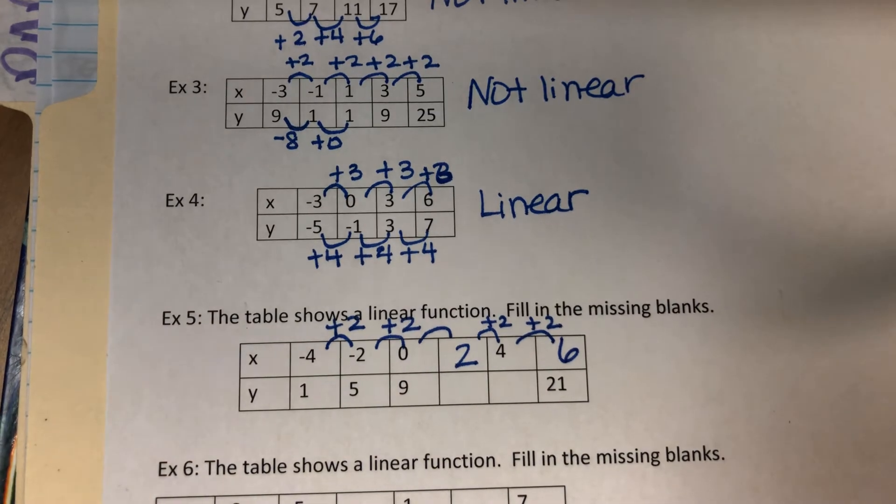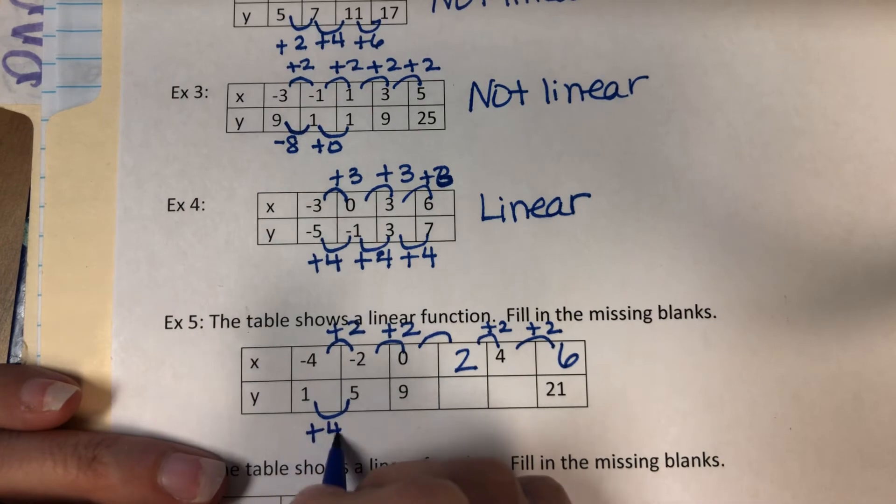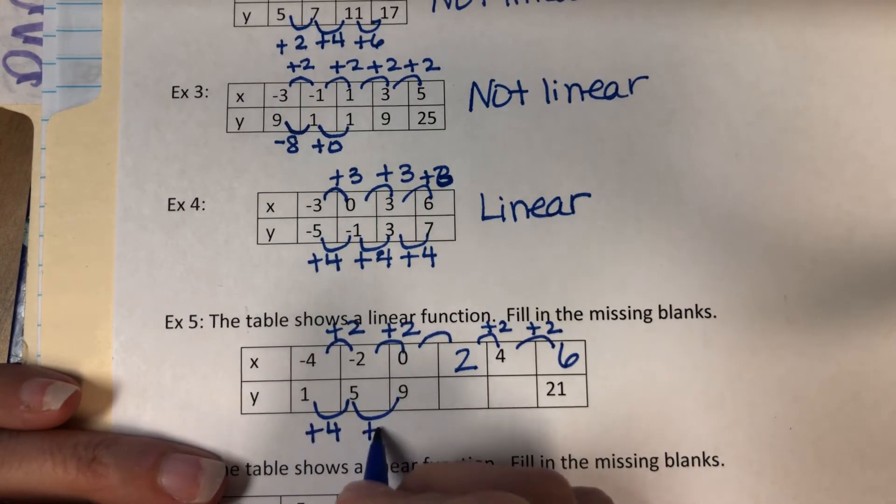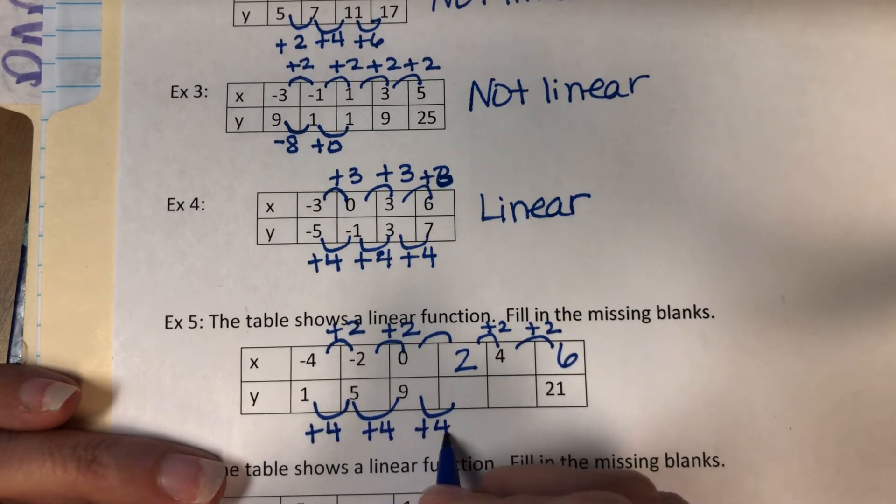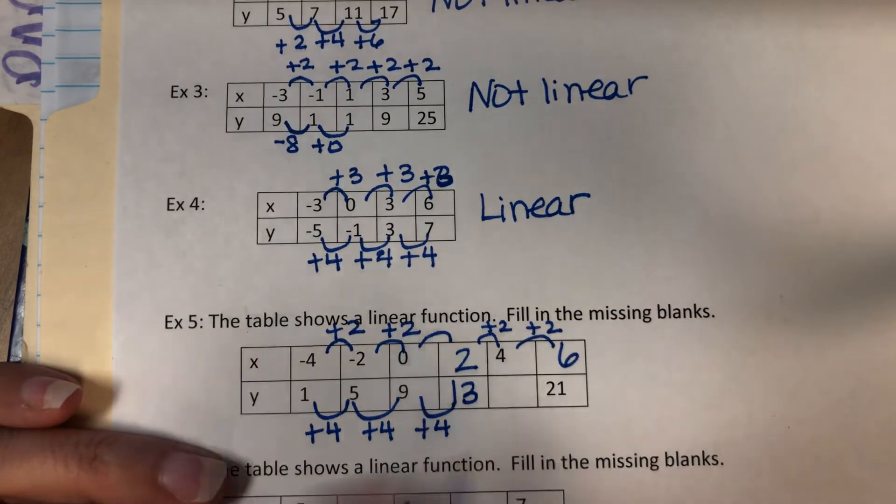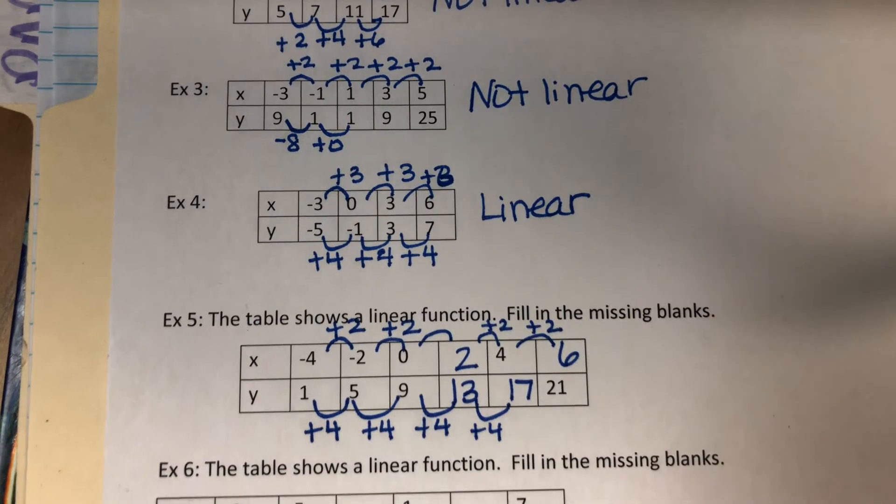Let's do the same thing with the y's. What do I do to 1 to get to 5? Add 4. 5 to get to 9? Add 4. So 9 plus 4 is 13. And then 13 plus 4 is 17. 17 plus 4 is 21.